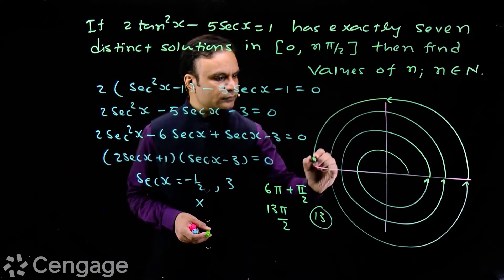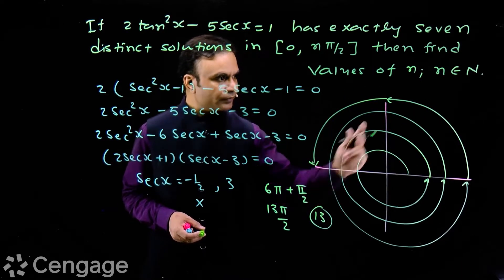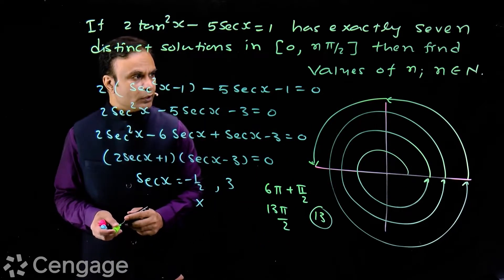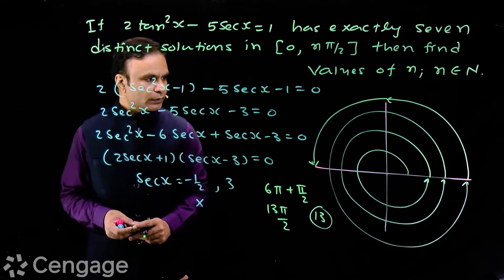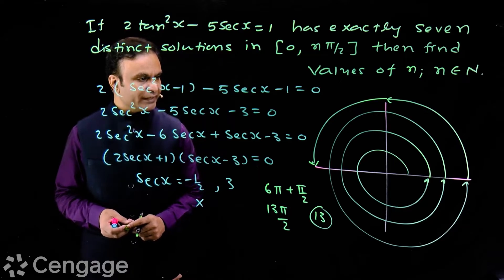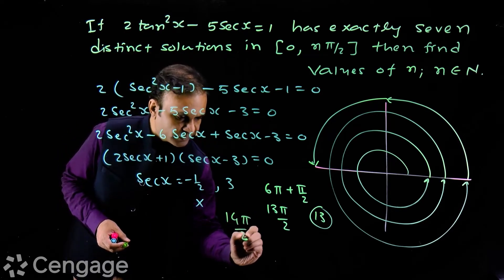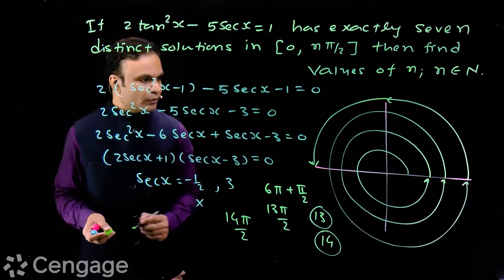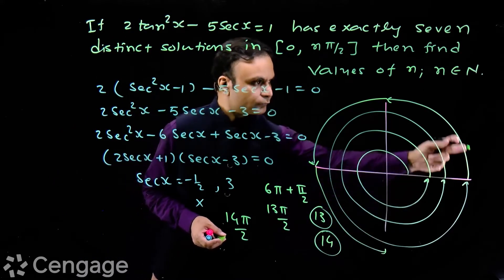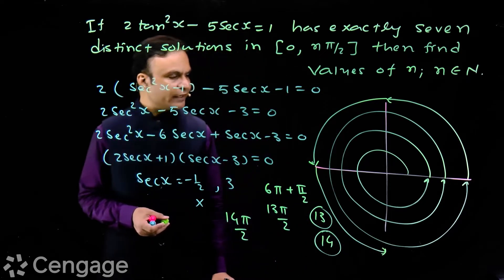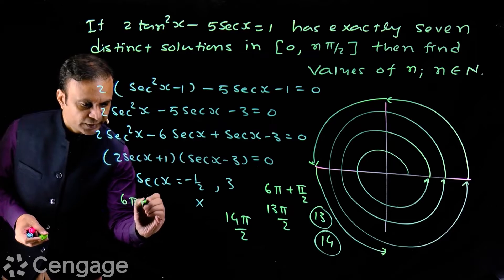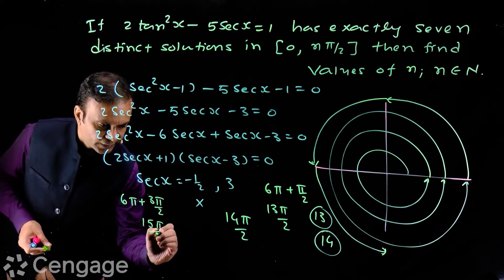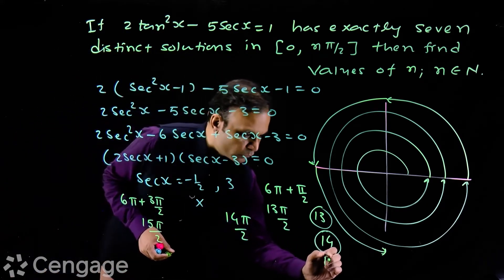Or we can take a half turn. If we take this half turn, then we also get only one more value of x for which sec x = 3. 6π + π = 7π, which equals 14π/2. So one more value of n is 14. Or we can take three-quarter turns, in which case we have 6π + 3π/2, which equals 15π/2. So one more possible value of n is 15.